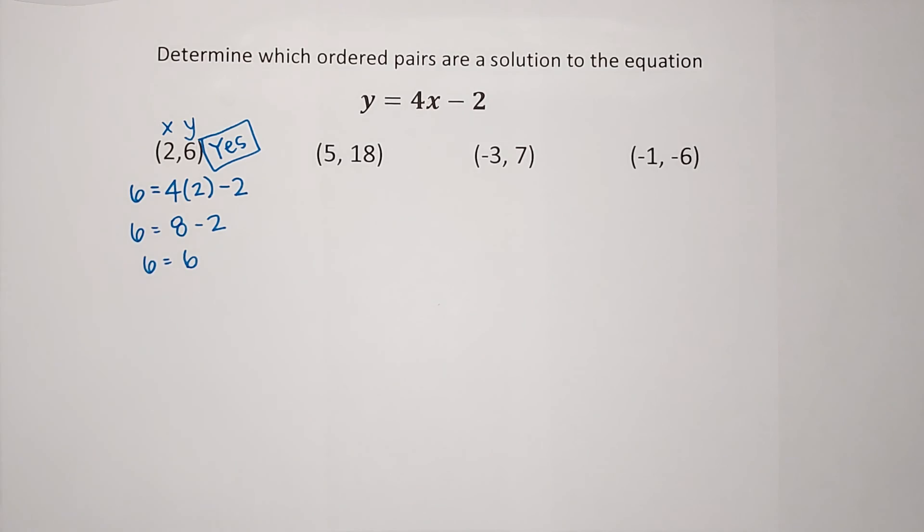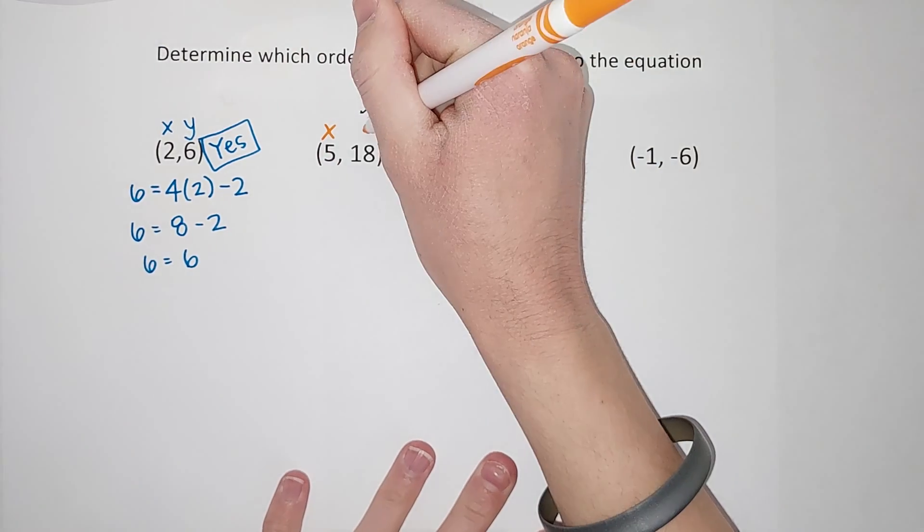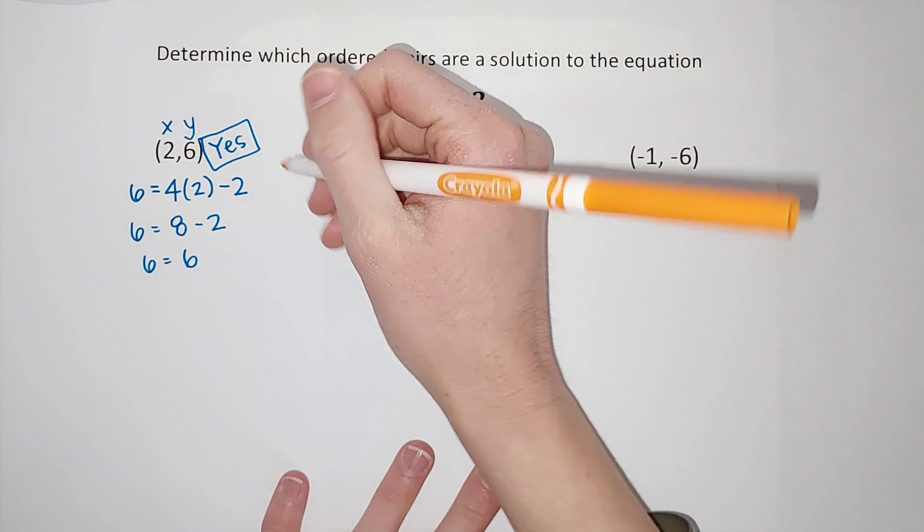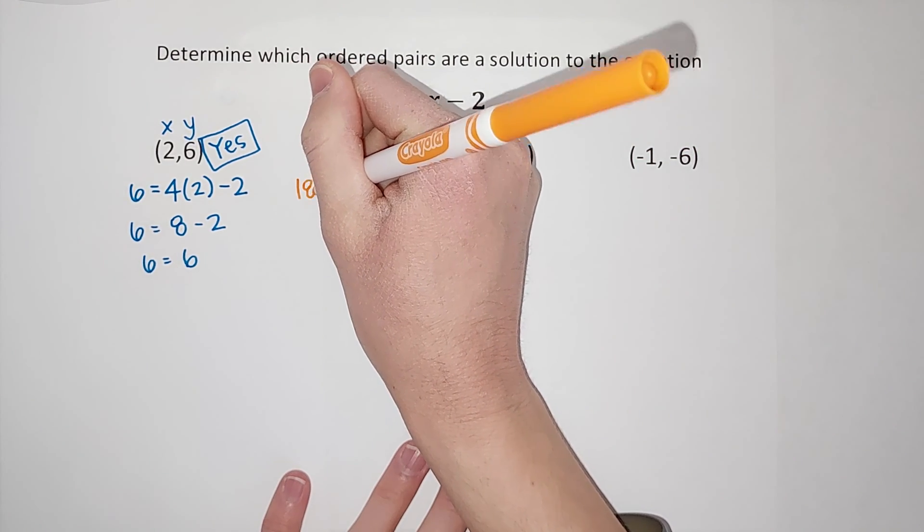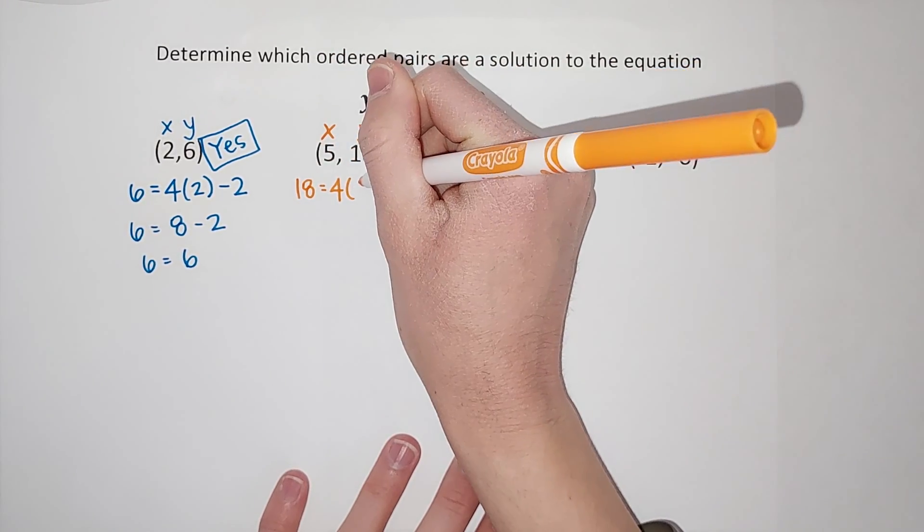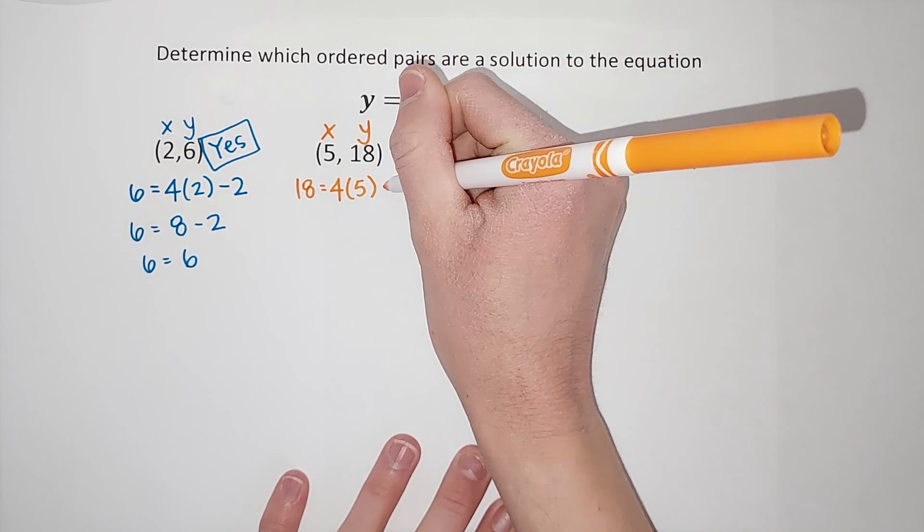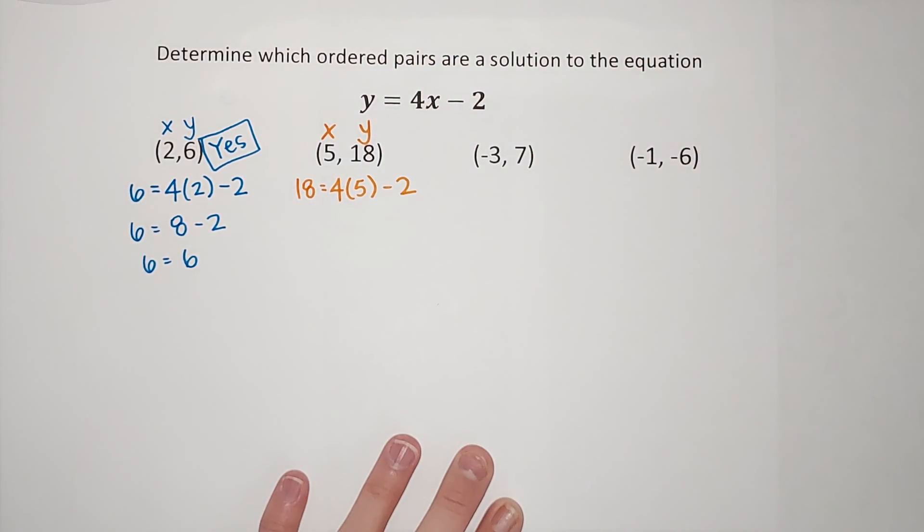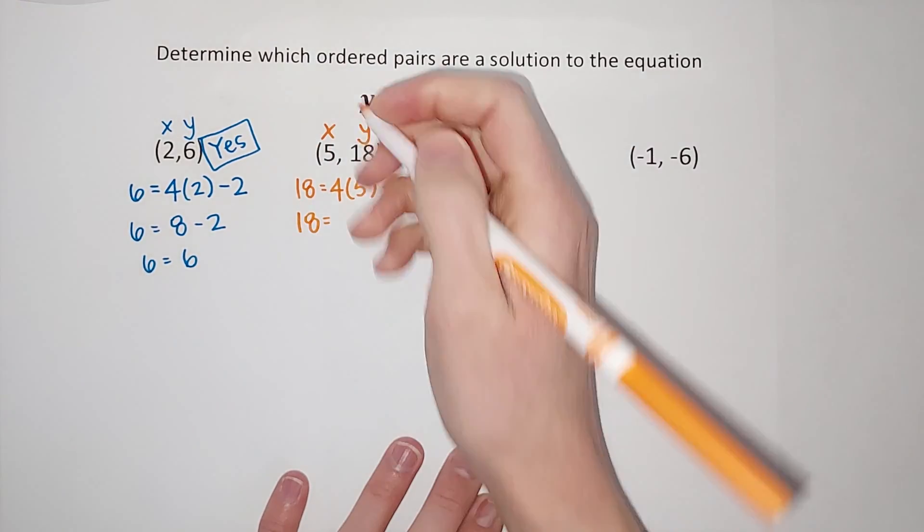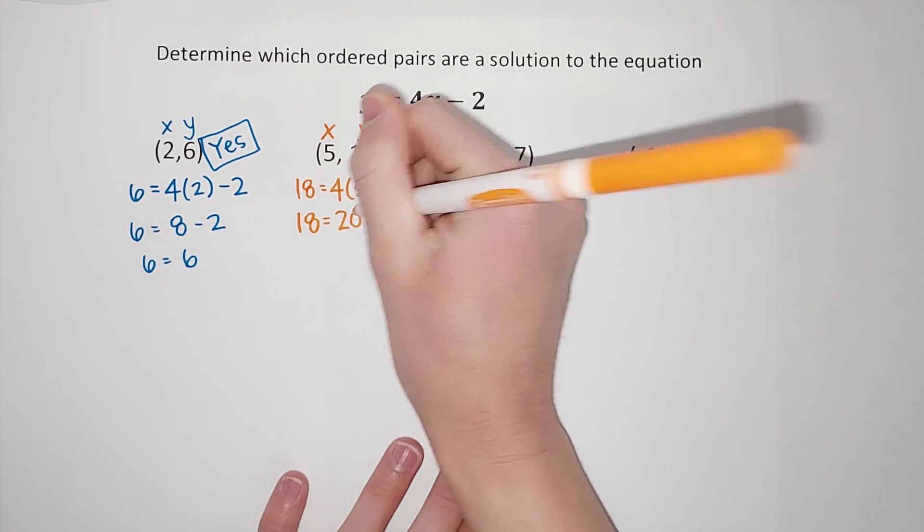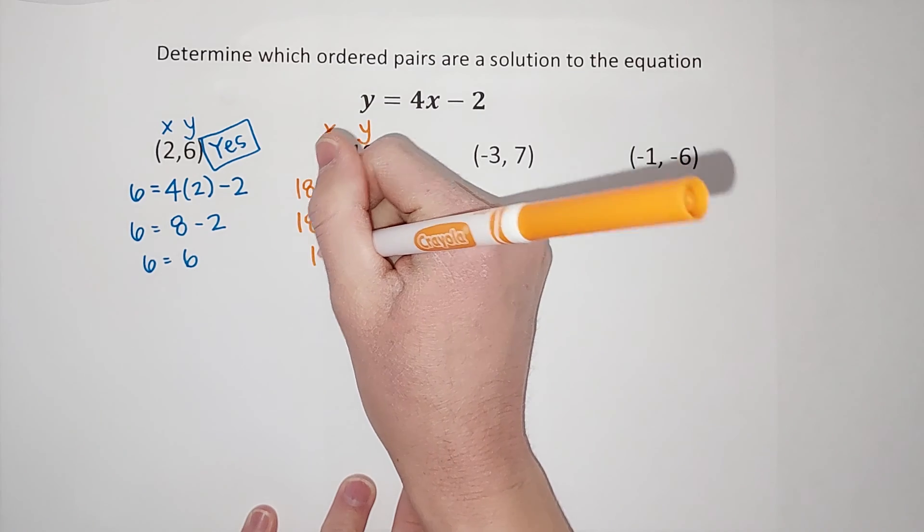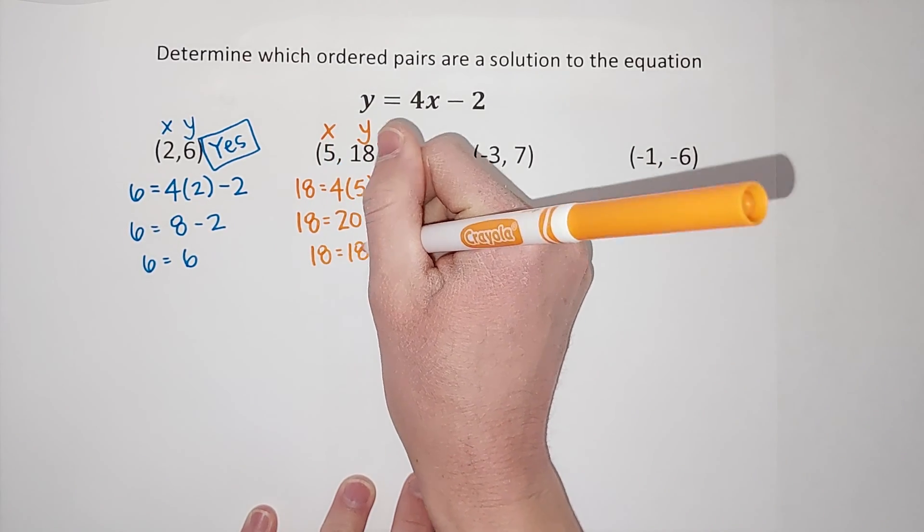Alright, let's look at our second one. Again, my first number is considered my x, my second number is considered my y. So, I'm going to write this as 18 equals 4 times x, which is 5, or we're seeing if it can be 5, minus 2. So, I'm going to have 18 equals 4 times 5 gives me 20. We still have the minus 2. 20 minus 2 is 18. So, I end up with 18 equals 18, which is true.